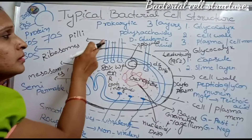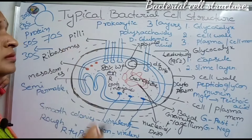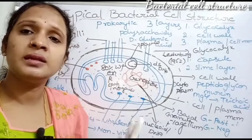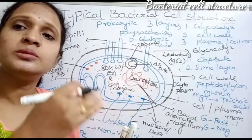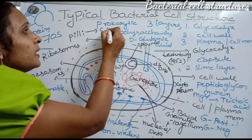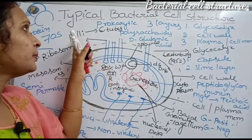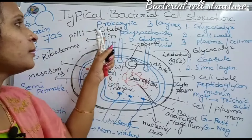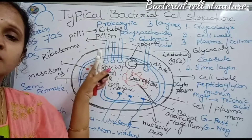Bacterial cells also have long hair-like structures called pili. The pili are not used for locomotion. They are used during conjugation — the transfer of genetic material from one bacterial cell to another through conjugation tubes. The pili form these conjugation tubes. The pili are made up of a special protein called pilin — very important for MSET students.